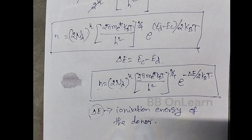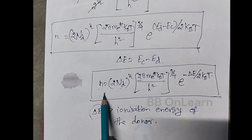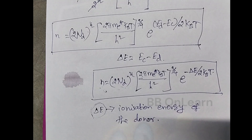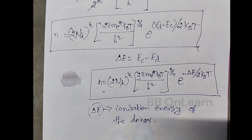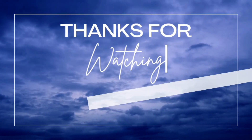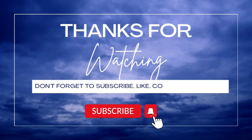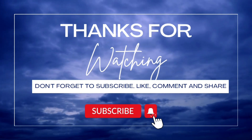This is a very important topic — a 16-mark question. Write down the expression for carrier concentration in an N-type semiconductor, the equation, delta E, and its definition. Thank you students, thank you so much.